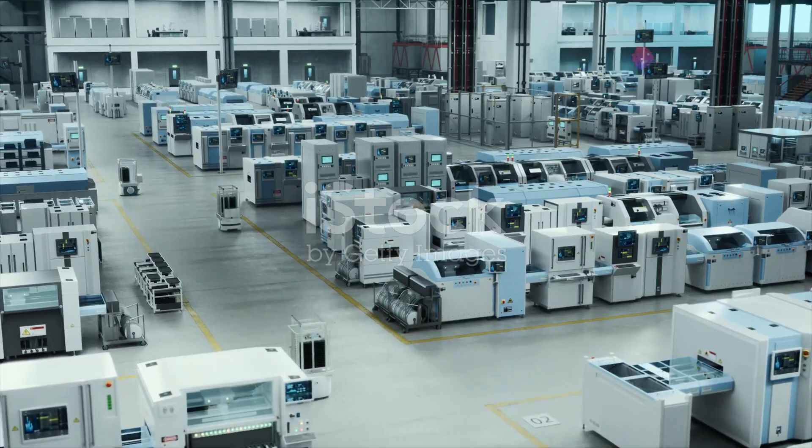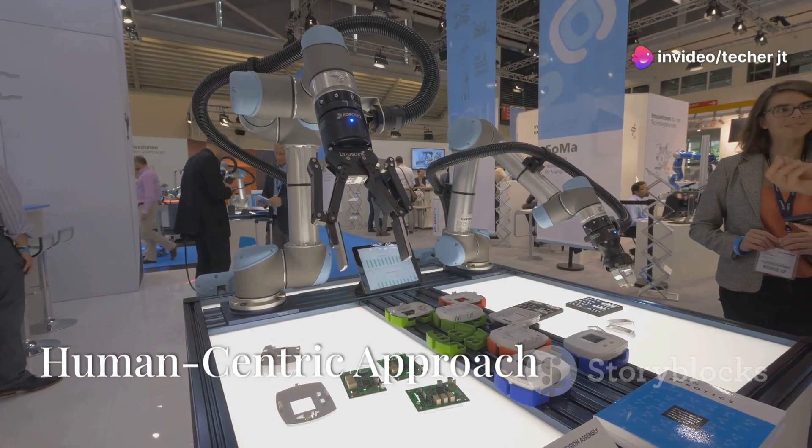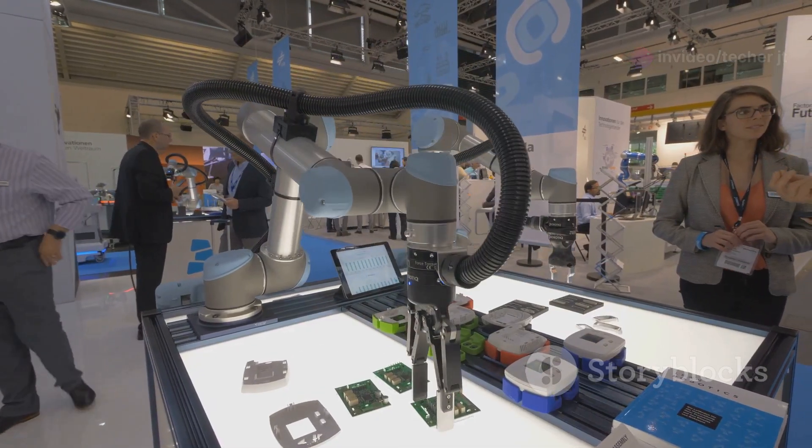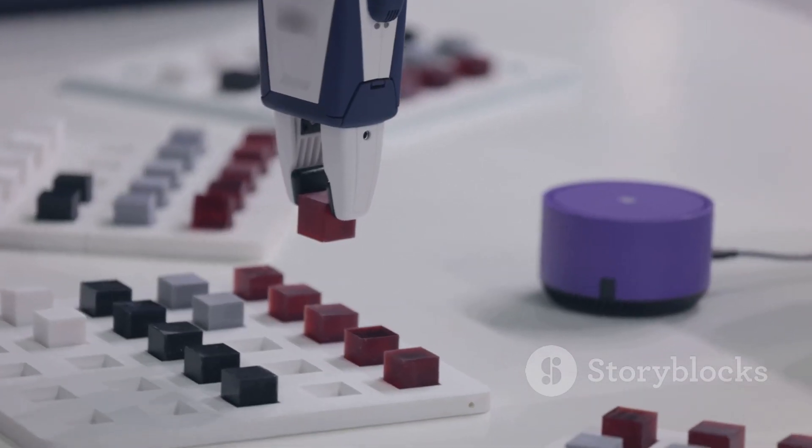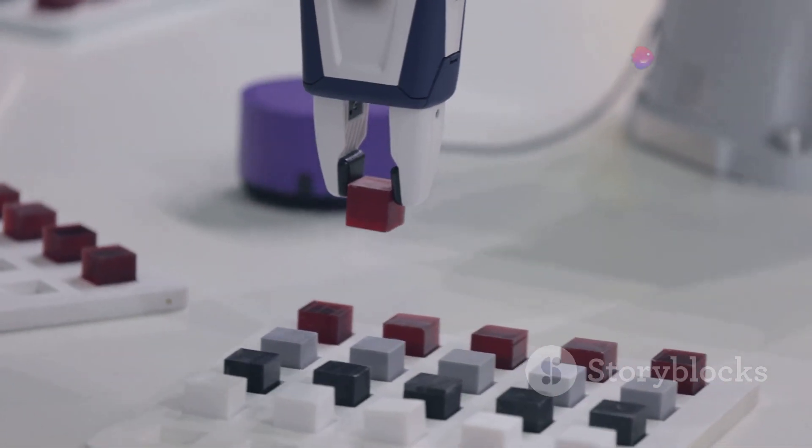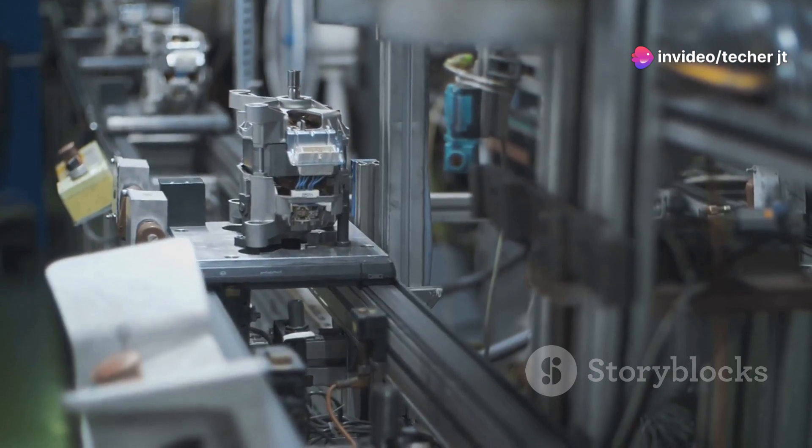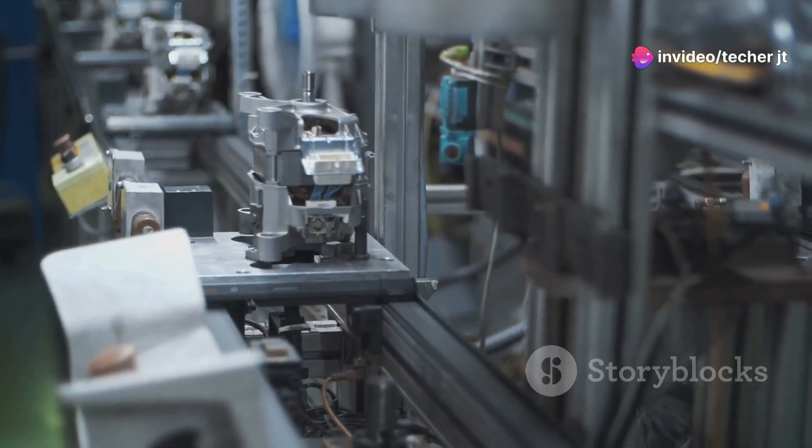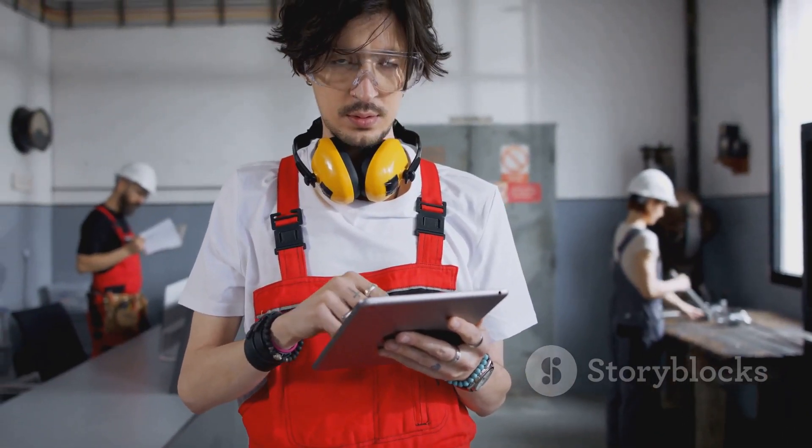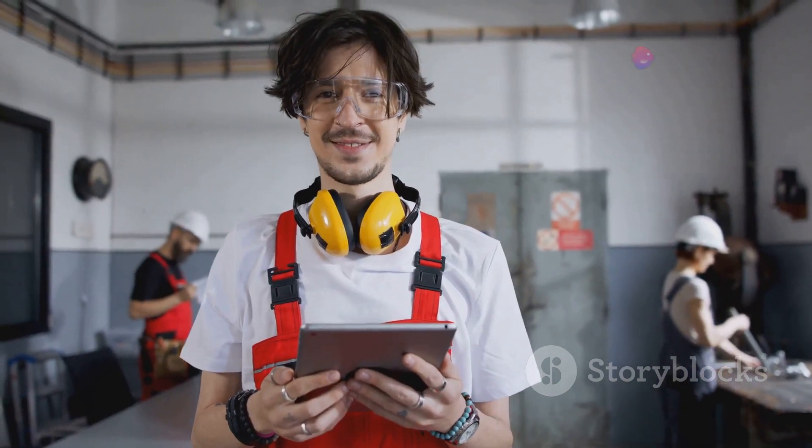Here are the key aspects of Industry 5.0. The first key aspect is the human-centric approach. Industry 5.0 emphasizes the role of humans in the manufacturing process. It seeks to create environments where humans and machines work collaboratively, leveraging the strengths of both. This approach aims to enhance the creativity, decision-making, and well-being of workers rather than replacing them with automation.